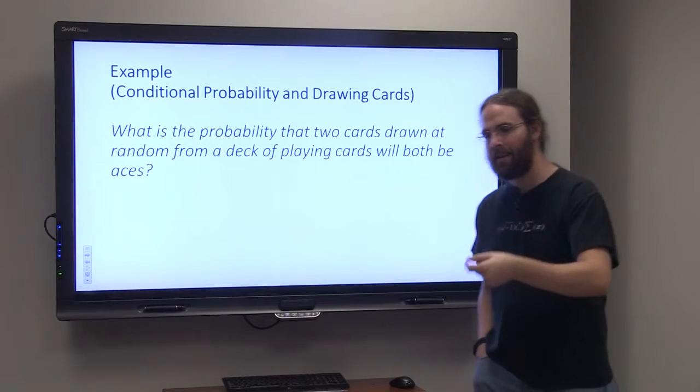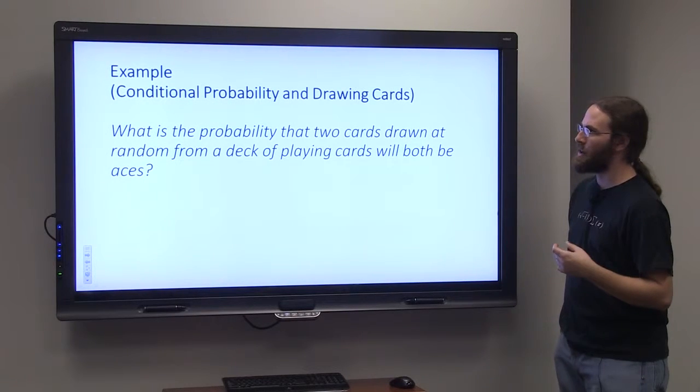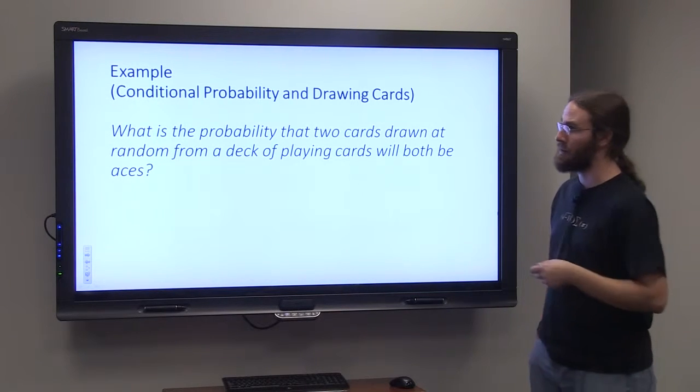The second event is not affected by the first event. But with conditional probability this changes. The second event is affected by the outcome of the first event.